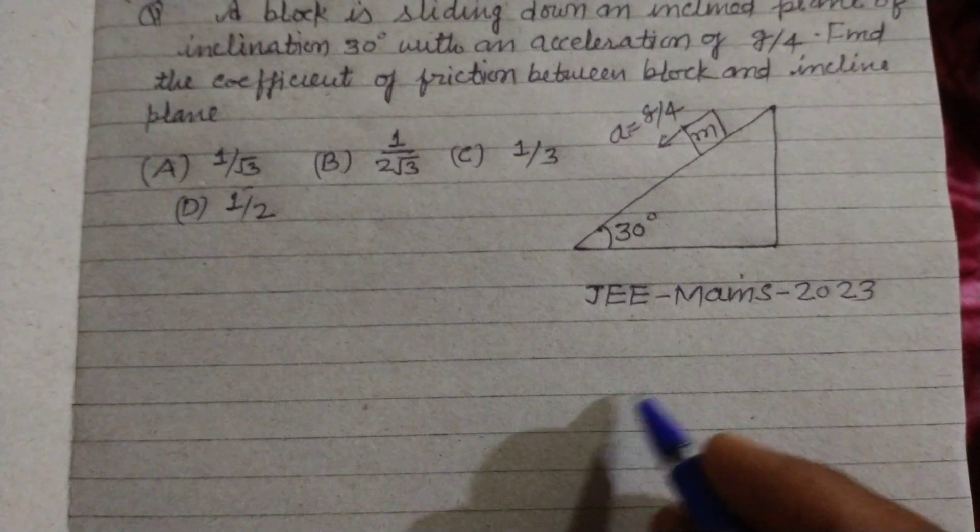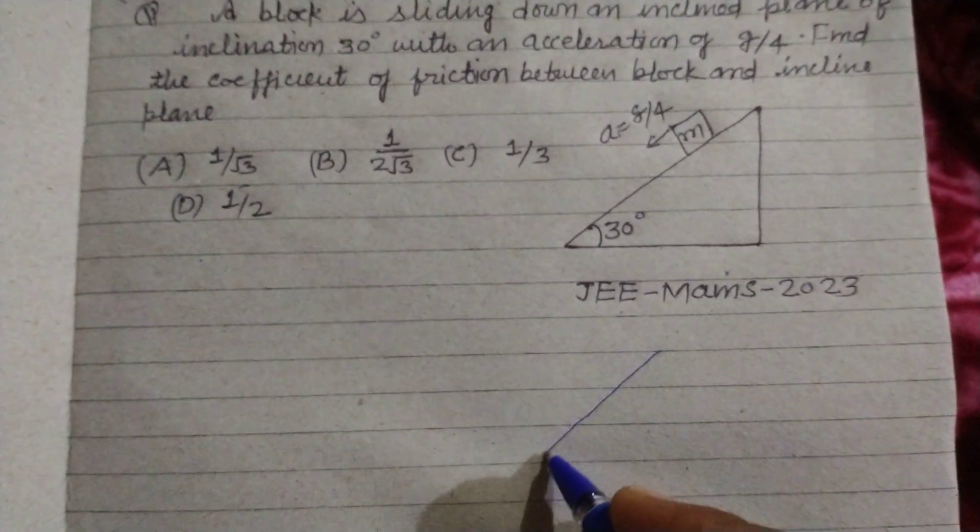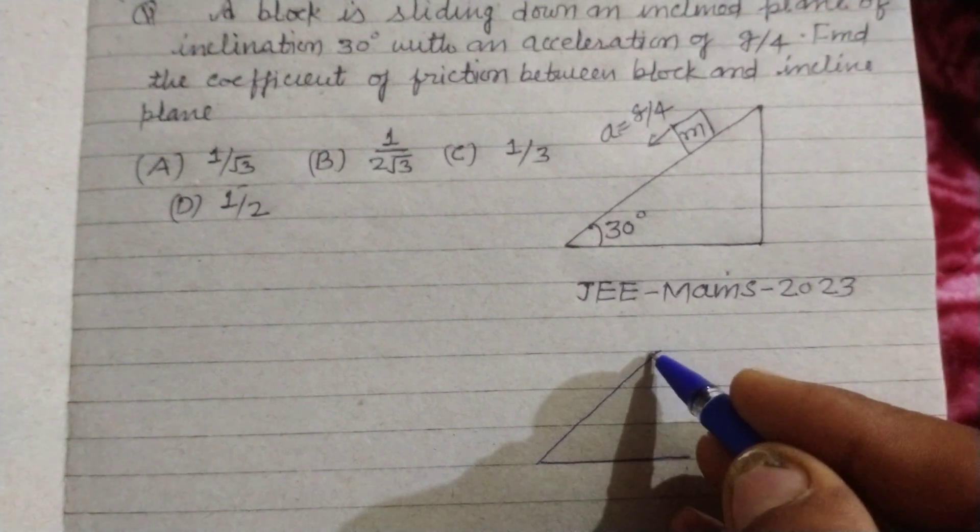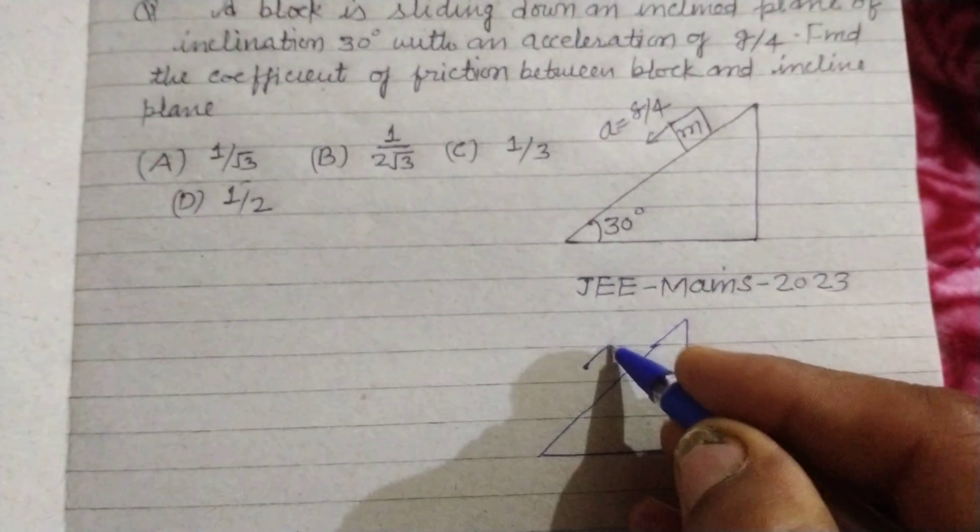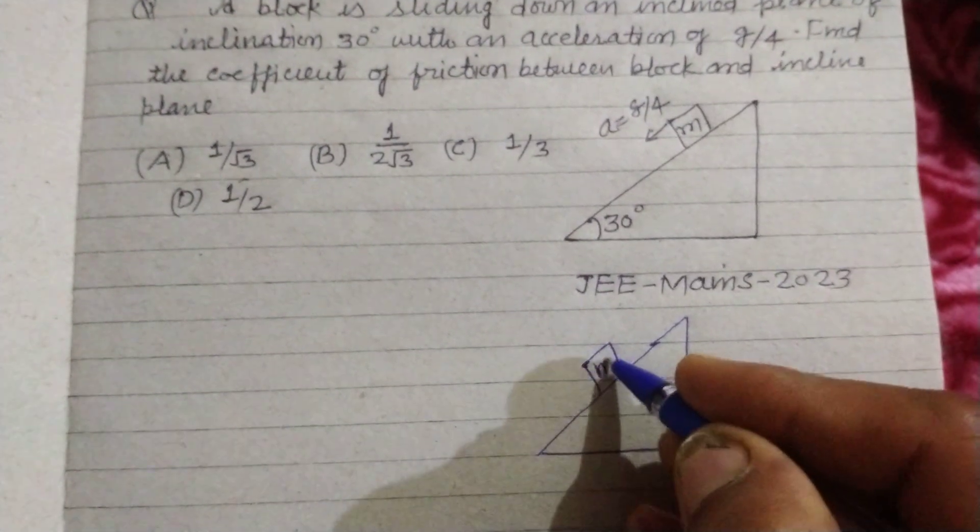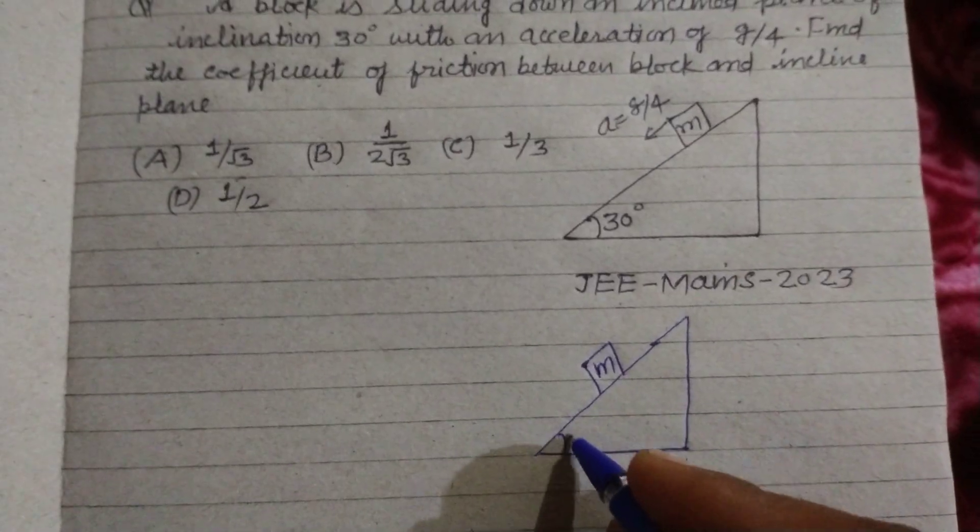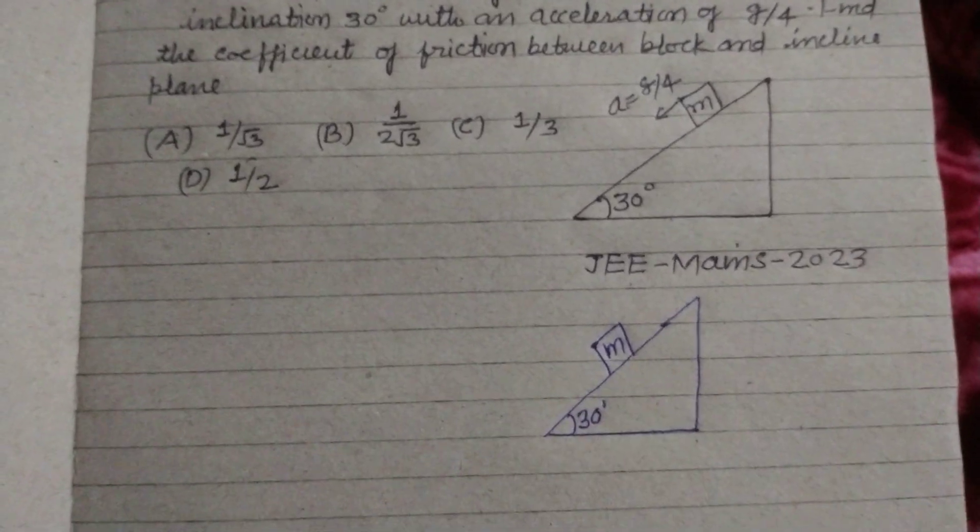So first we make the free body diagram of this block which is sliding down the inclined plane. So this is the block having mass m and this is the inclination of the plane.